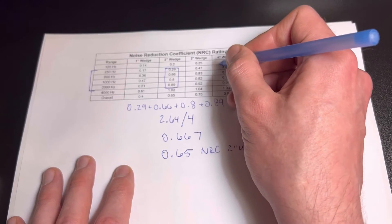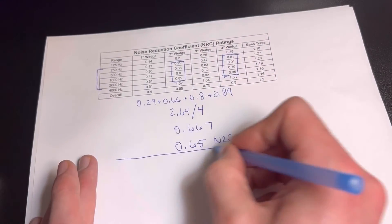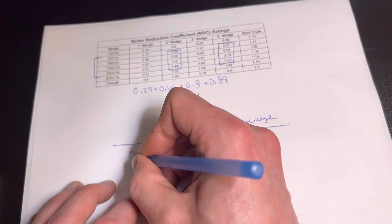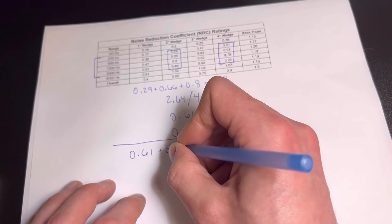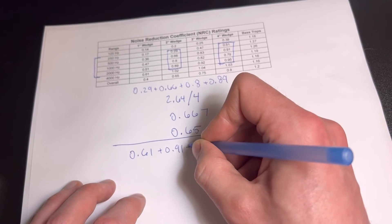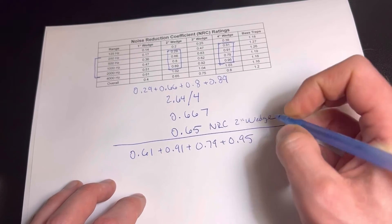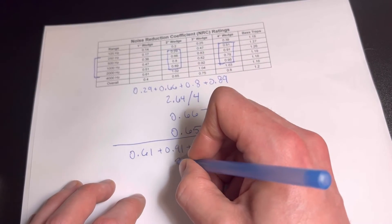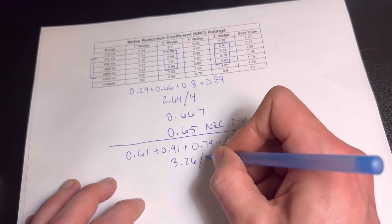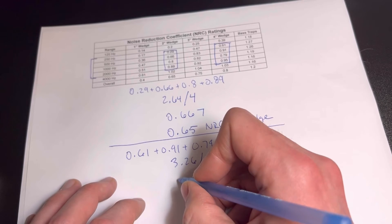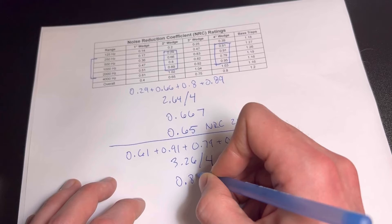Now let's try the four inch wedge. I'm going to do the same thing. Add the numbers together: 0.61 plus 0.91 plus 0.79 plus 0.95. It's going to give you 3.26, and then to get to the average you divide that by four.